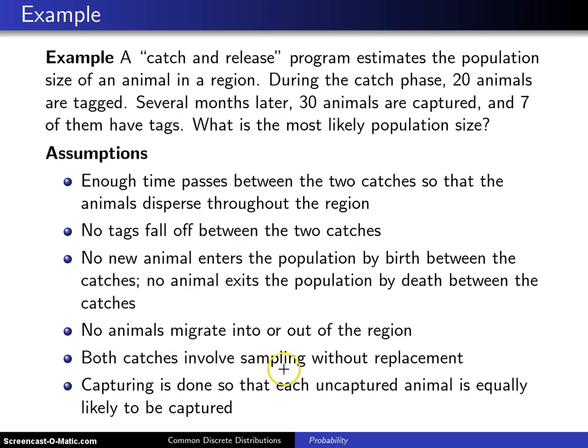Both catches involve sampling without replacement. So for the first catch of 20 animals, you capture an animal and then you tag that animal. You can't recapture the same animal and put a second tag on them. That doesn't make sense.